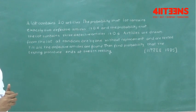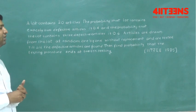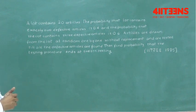You need to understand the question. A lot contains 20 articles and the probability that the lot contains exactly 2 defective is 0.4, and the lot contains 3 defective is 0.6.